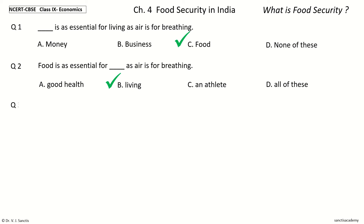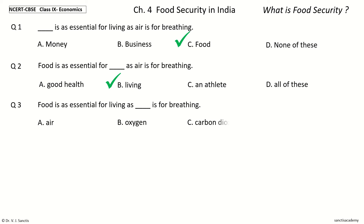Question 3: Food is as essential for living as dash is for breathing. The options are: air, oxygen, carbon dioxide, nitrogen. Your time to choose. And the answer is air. So food is as essential for living as air is for breathing.